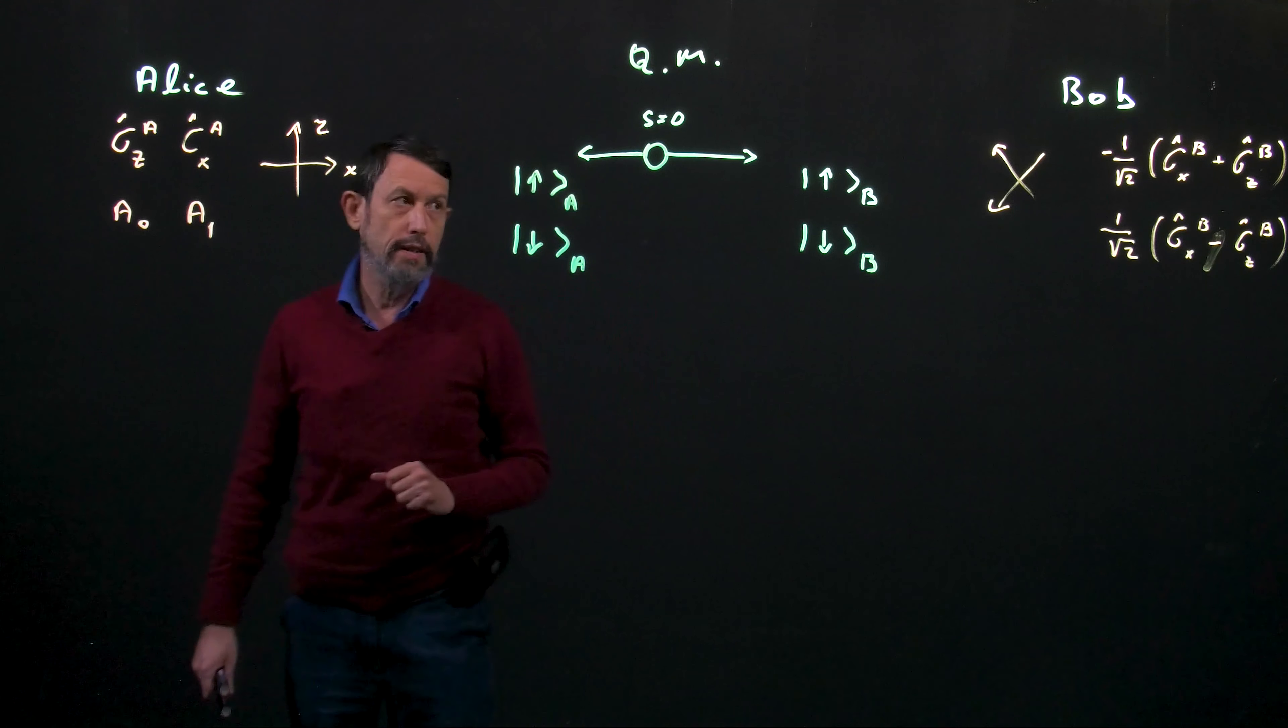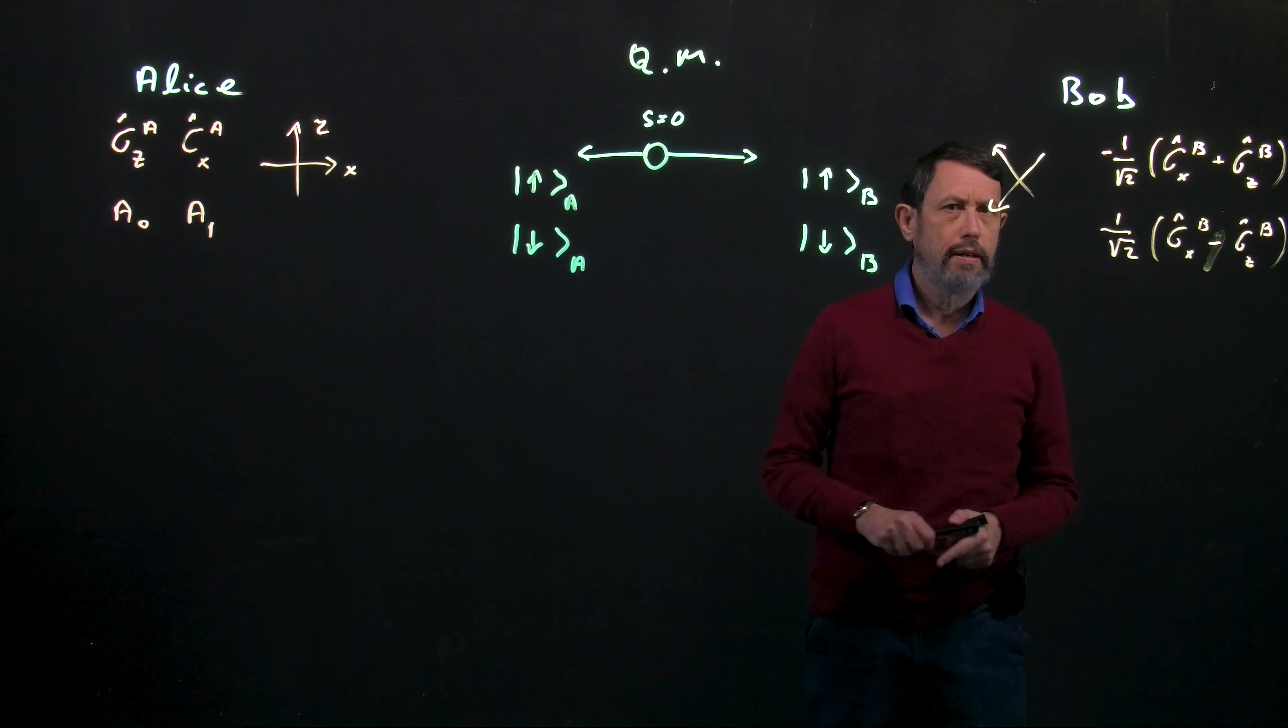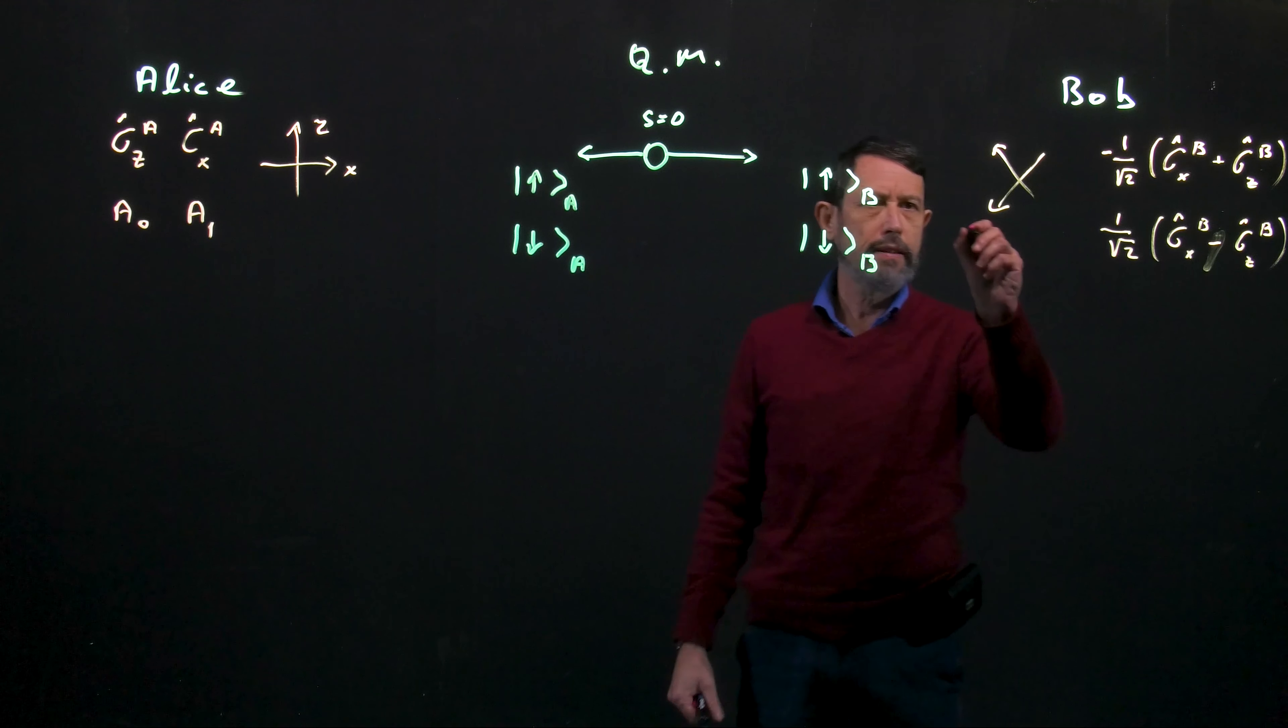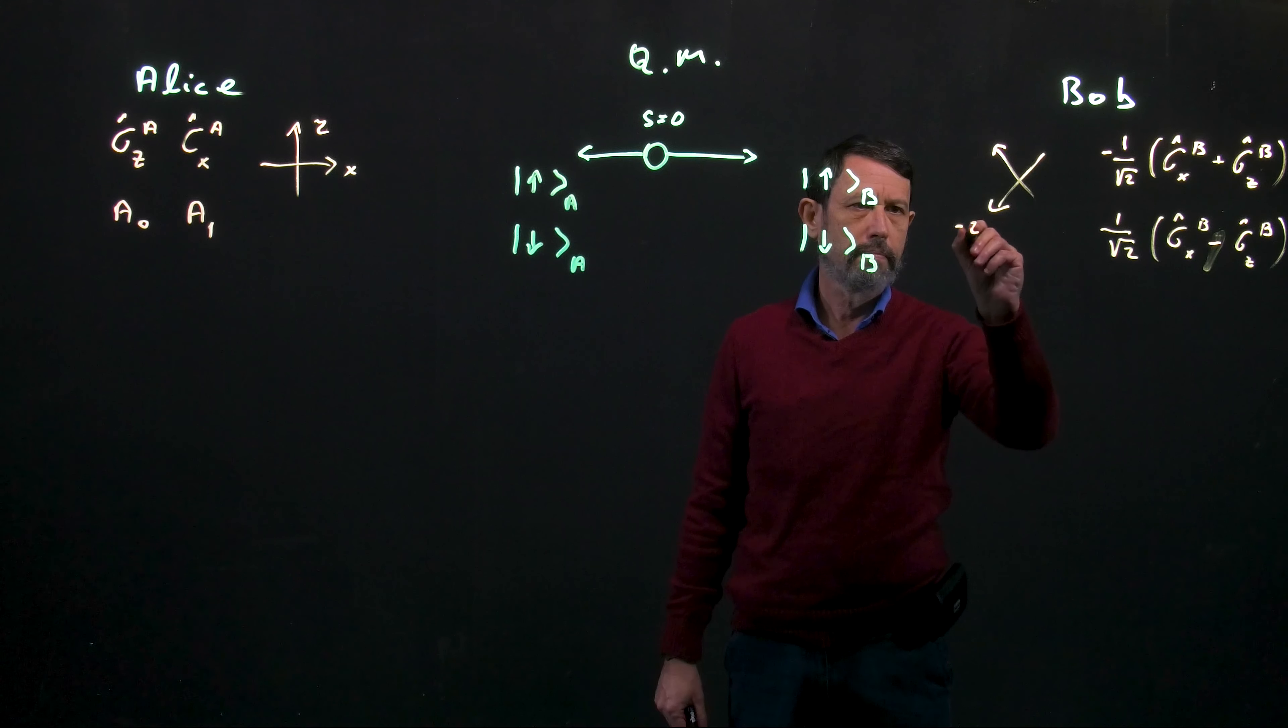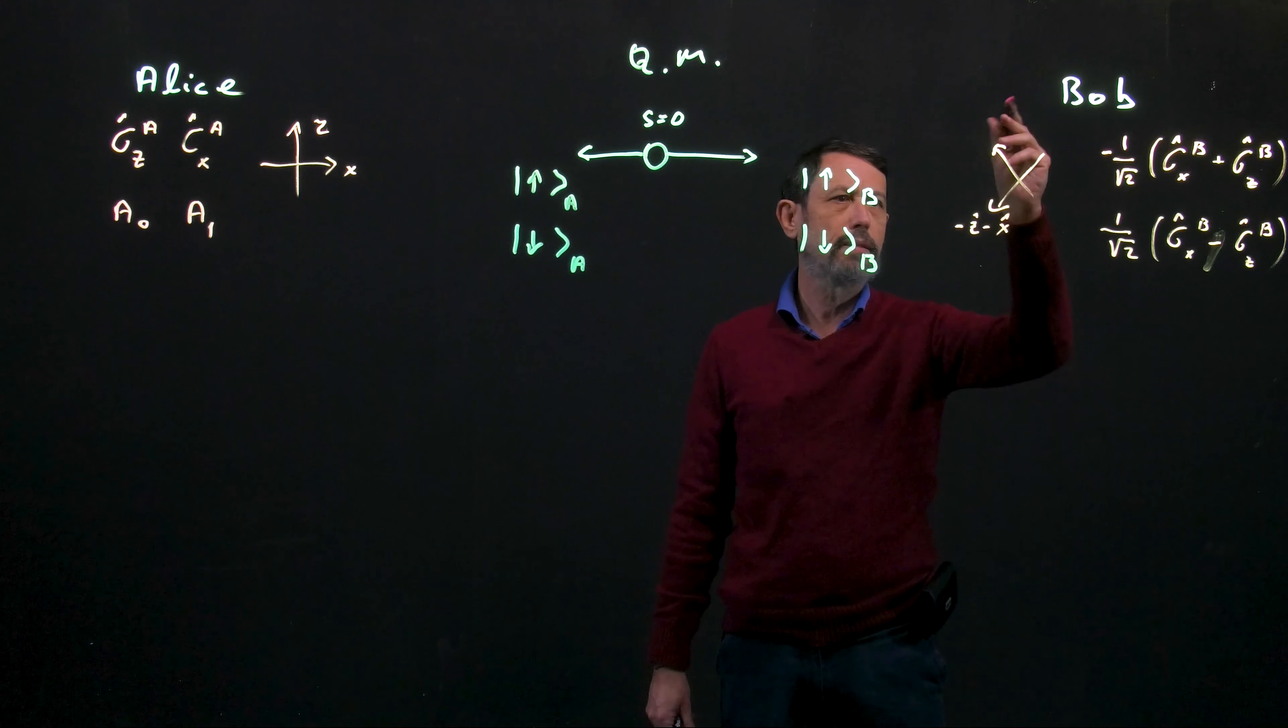Okay so to conclude both of them measure the direction of the spin but in different directions. Alice in z and x and Bob in z minus x and plus x minus z.